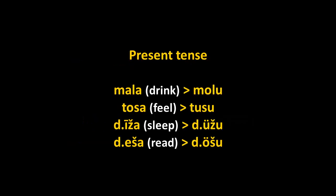The verb conjugation in Chechen has no person variation — no change between 'I do,' 'you do,' 'he does,' no first, second, third person or plural variation. You only have an infinitive and a set of present, future, and past tense forms.